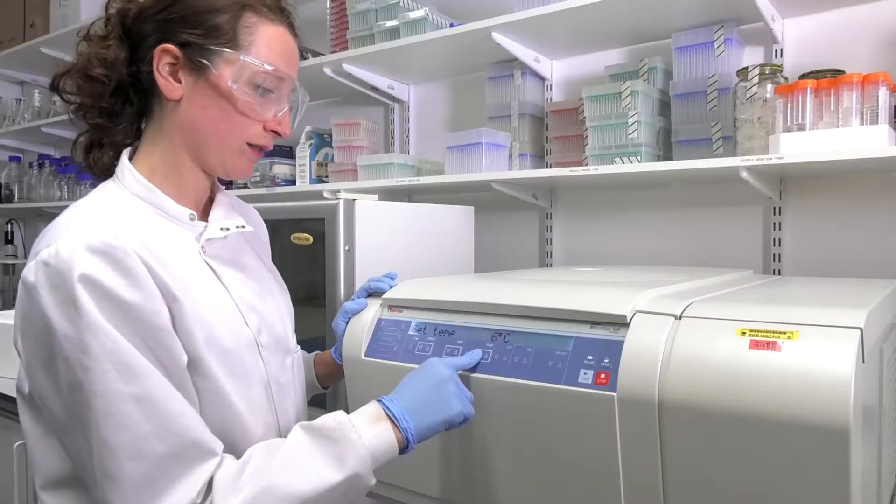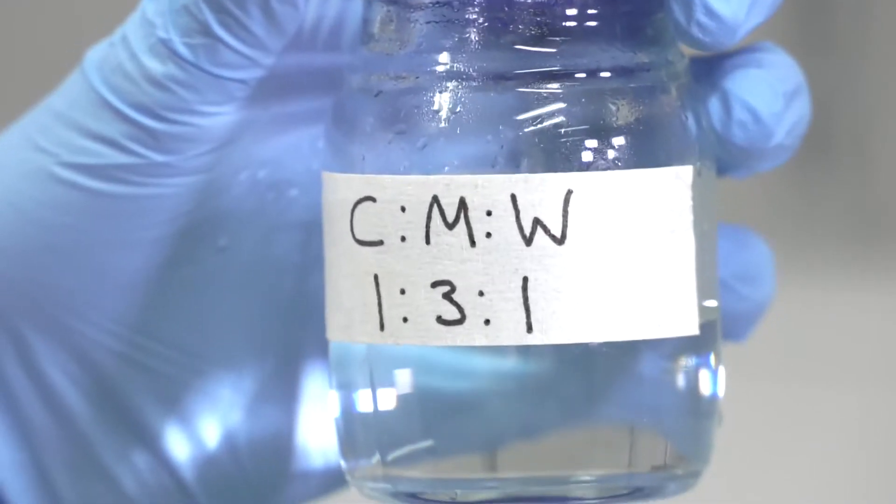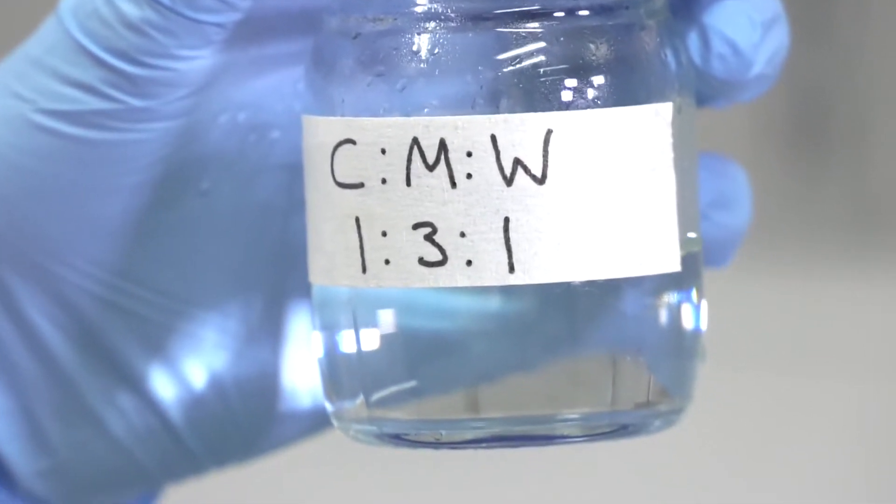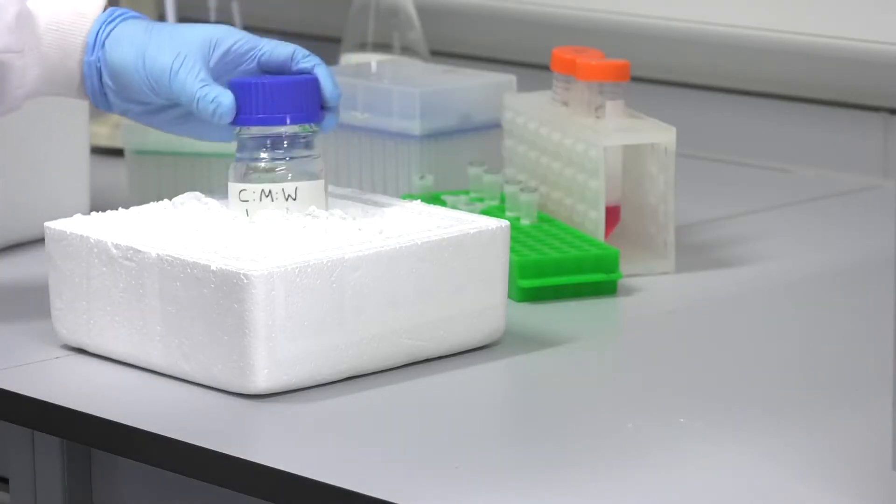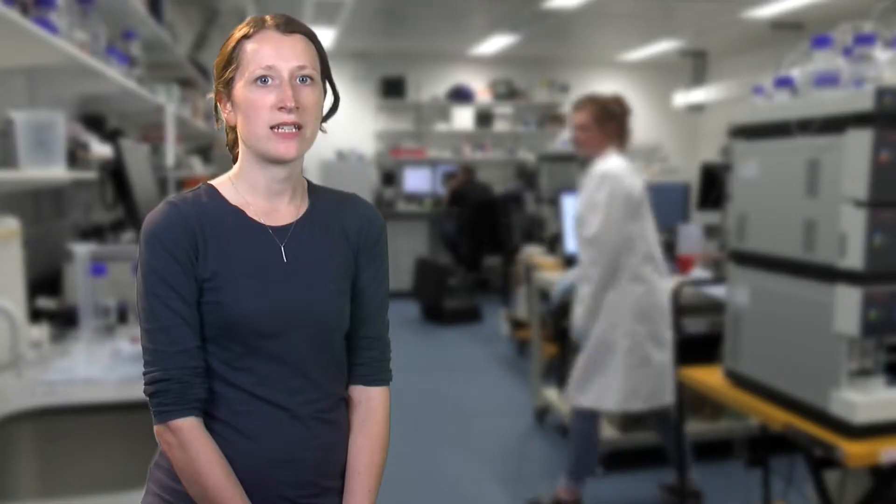Before we start extracting the samples, we need to prepare our equipment. Cool the centrifuges to 4 degrees C. Prepare the solvent, usually chloroform, methanol water, in the ratio 1 to 3 to 1 and place in an ice bath. If your samples need rapid cooling or freeze-thaw cycles, prepare a dry ice ethanol bath. Now we are ready to start.